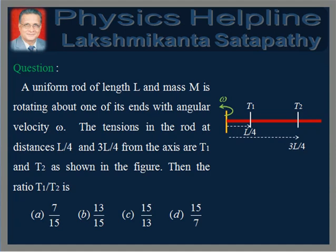A uniform rod of length L and mass M is rotating about one of its ends with angular velocity omega. The tensions in the rod at distances L by 4 and 3L by 4 from the axis are T1 and T2 as shown in the figure.